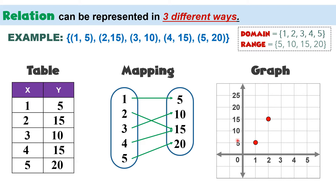The third ordered pair is (3,10): 3 from the x-axis and 10 from the y-axis — connect them and plot the point here. Fourth, (4,15): 4 here and 15 there — plot the point. And the fifth one, (5,20): 5 is here and 20 is over here — let us plot the point at their intersection. This is the graph of this set of ordered pairs.